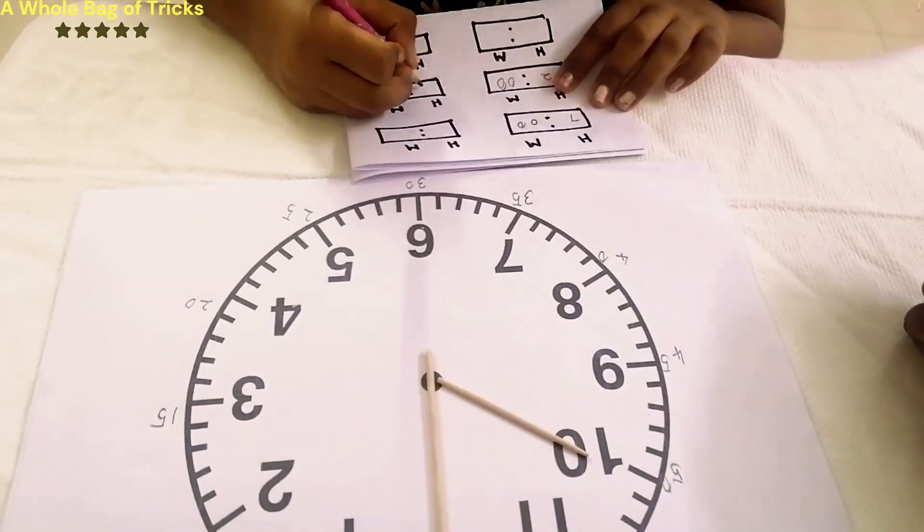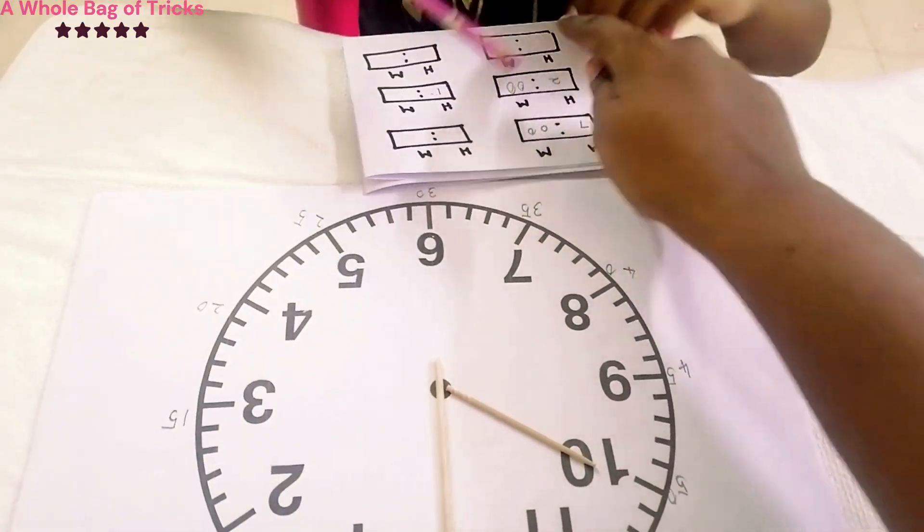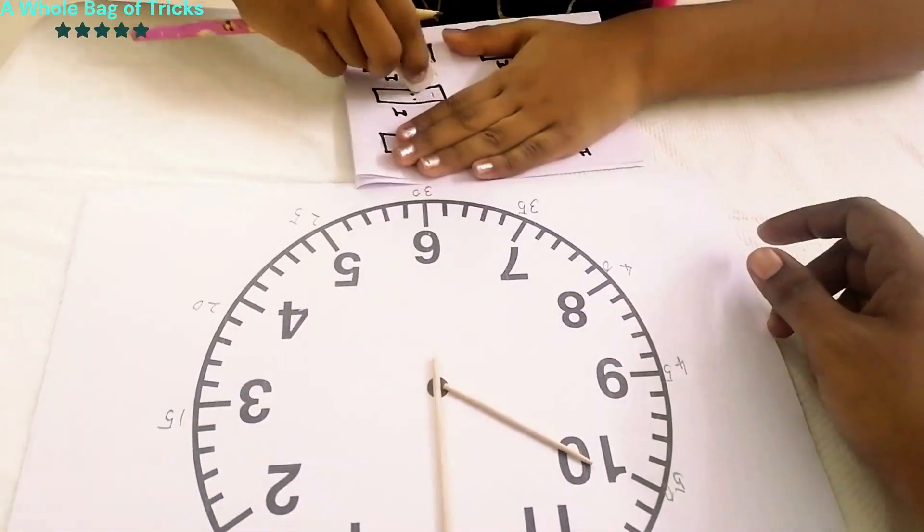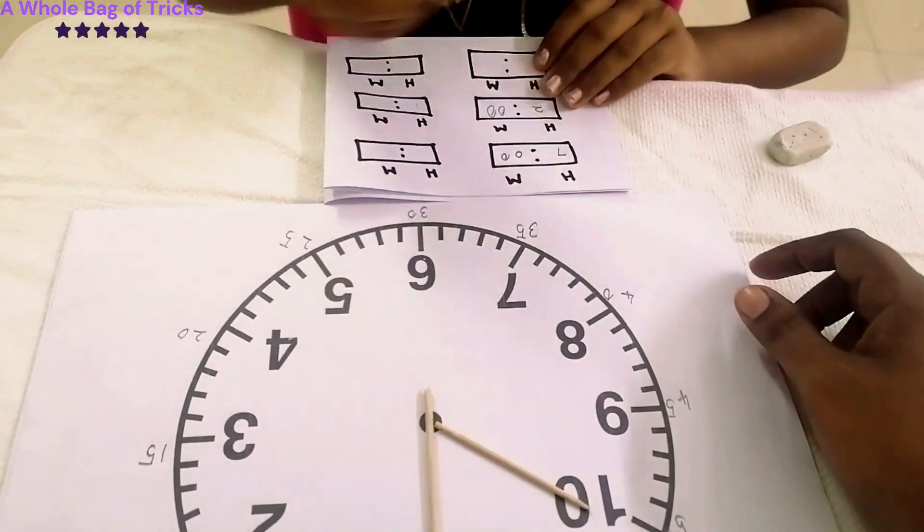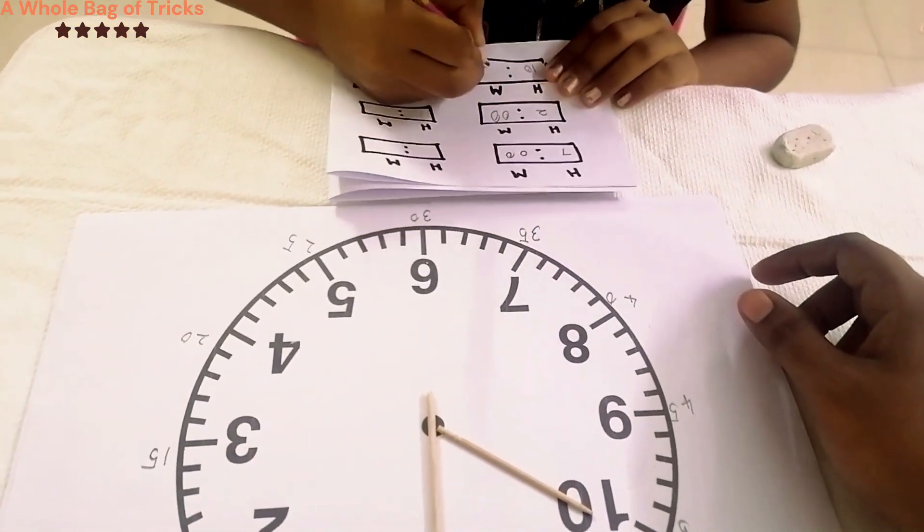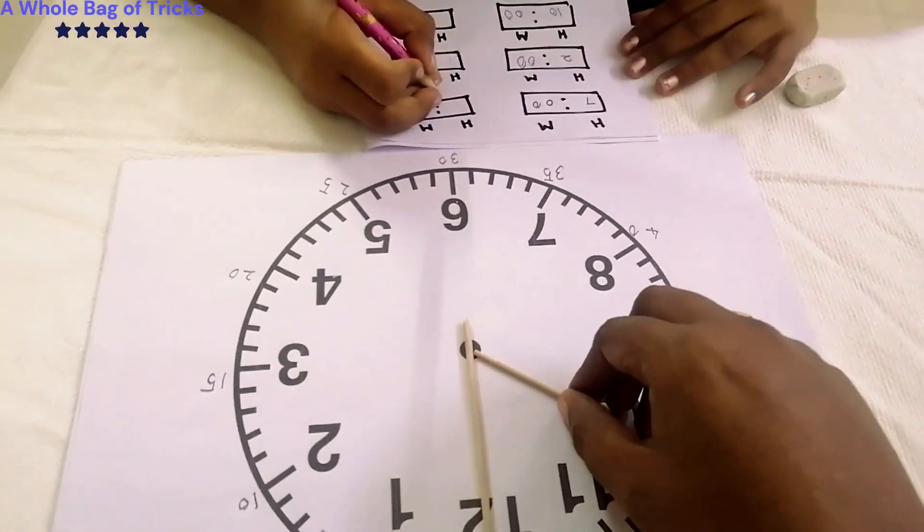Every time you move the stick, ask your kid to write down the time. Again specify that the shorter stick is the hour and it should come first and the longer stick number is the minutes that should come after the colon.